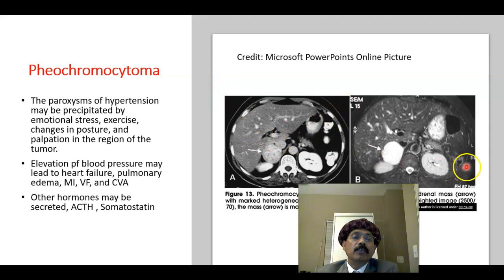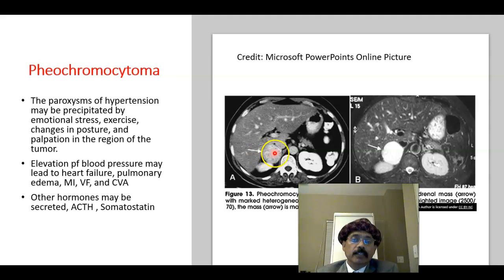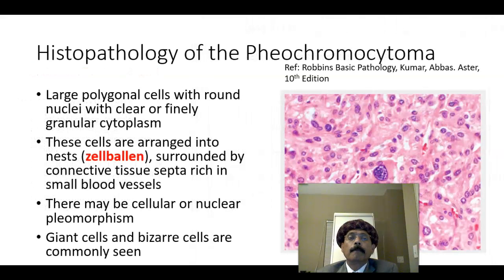Here is the abdominal imaging. This is the pheochromocytoma on the right side. We can see the liver, the aorta, the vertebral body, and the kidney. This is the adrenal medulla tumor — the pheochromocytoma.